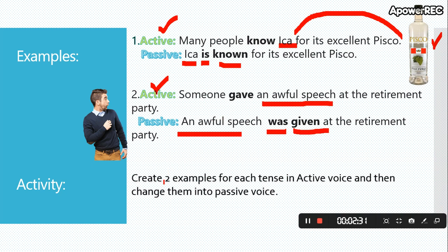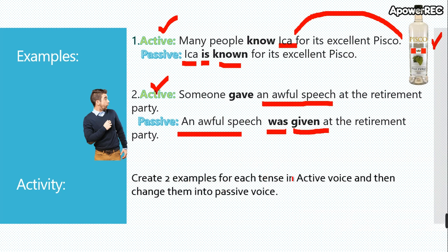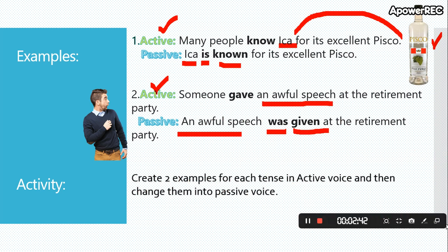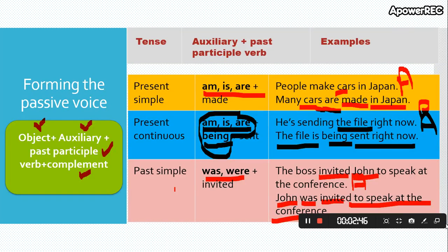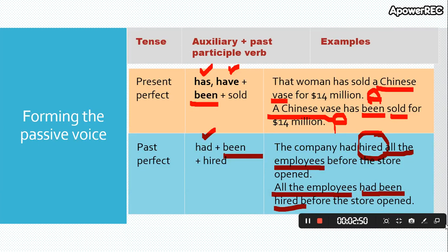Now you have to do an activity. Create two examples for each tense in active voice, and then you change them into passive voice. Two examples for each one. So now we have to do 3, 6, 7, 8. In total, 16 sentences — because they are in active form and in passive form.